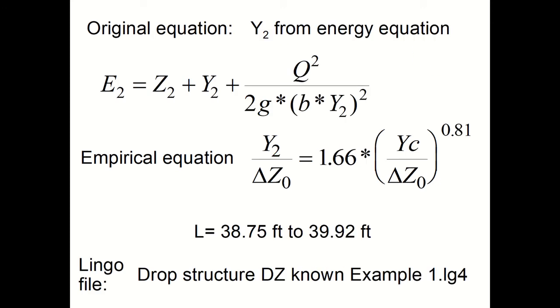Y₂, which would be the depth of the flow as it exits the hydraulic drop structure, can be used either from the energy equation, which is based on theory, or the empirical equation, which is based on the lab results. If you use these two sets of equations and compute both Y₁ experimental, Y₁ theoretical, Y₂ experimental, and Y₂ theoretical, you get that the length of the drop structure should be anywhere from 38.75 to 39.92 feet.